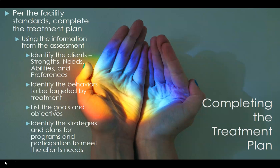No matter which type of treatment plan your facility is following, all of the information included in the plan comes from the assessment. There are several key areas to include in your treatment plan: identify the client's strengths, needs, abilities, and preferences. In paragraph form, identify the client's treatment needs and behaviors to be targeted by treatment. List the agreed-upon goals and objectives directly from the assessment and identify the strategies and plans for programs to help the client achieve his or her goals.